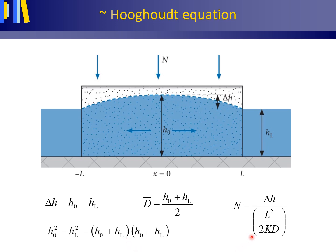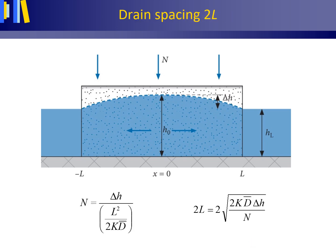This equation is a simplified version of the Hooghoudt equation, named after the Dutch hydrologist Siemen Barent Hooghoudt.